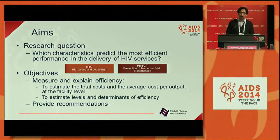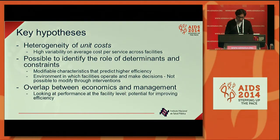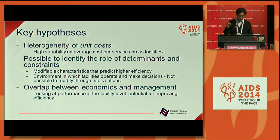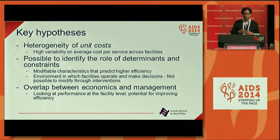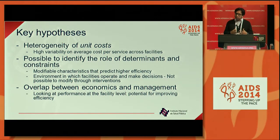We also hope that with this information we can provide specific recommendations to improve performance. A few key hypotheses behind this work: first, we expected some level of variability in unit cost across facilities implementing the same service. Second, that it would be possible to identify characteristics — the role of what we define as determinants and constraints.